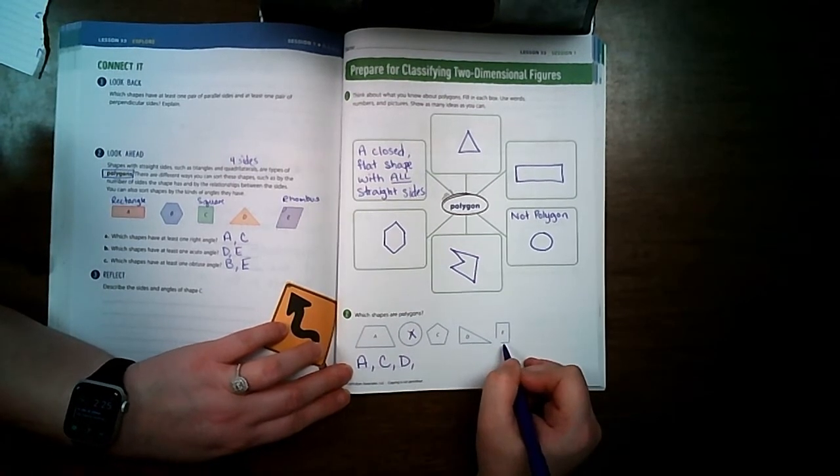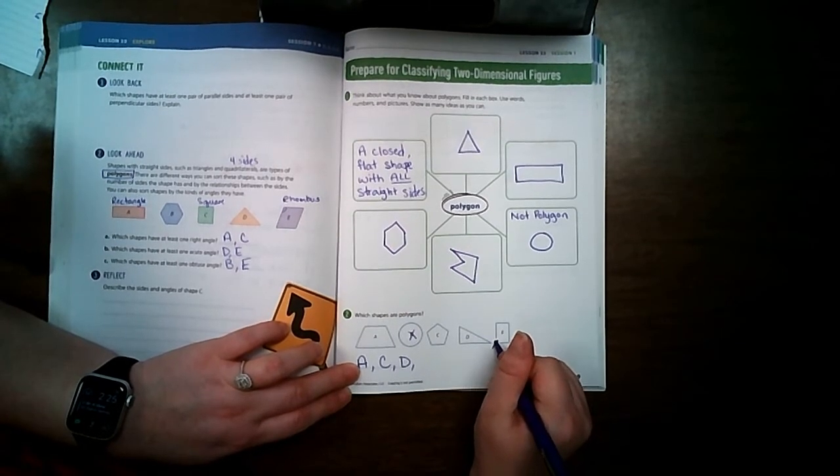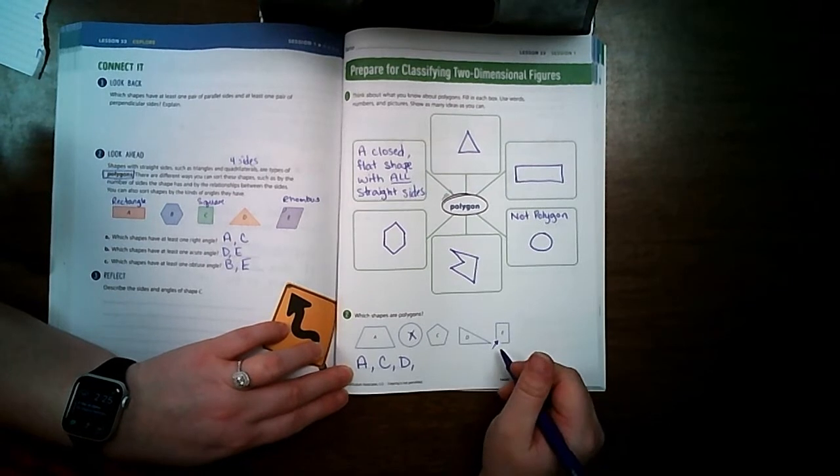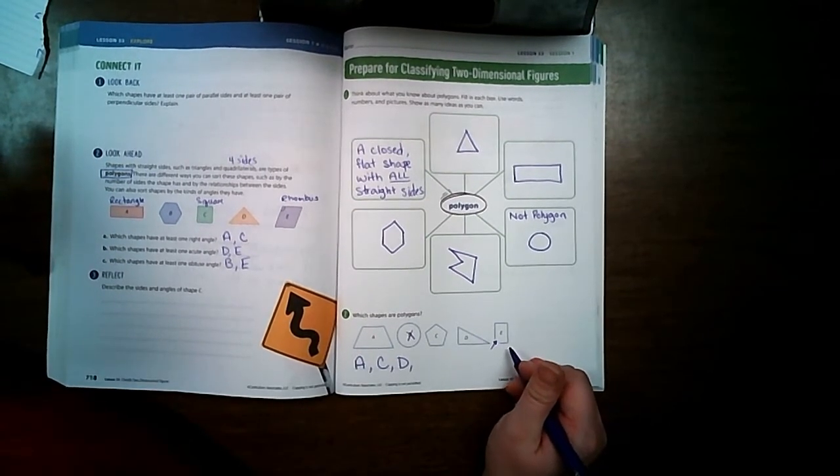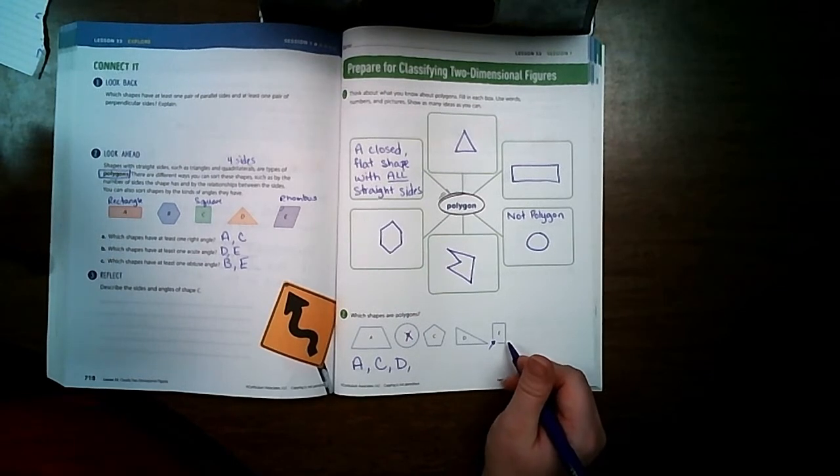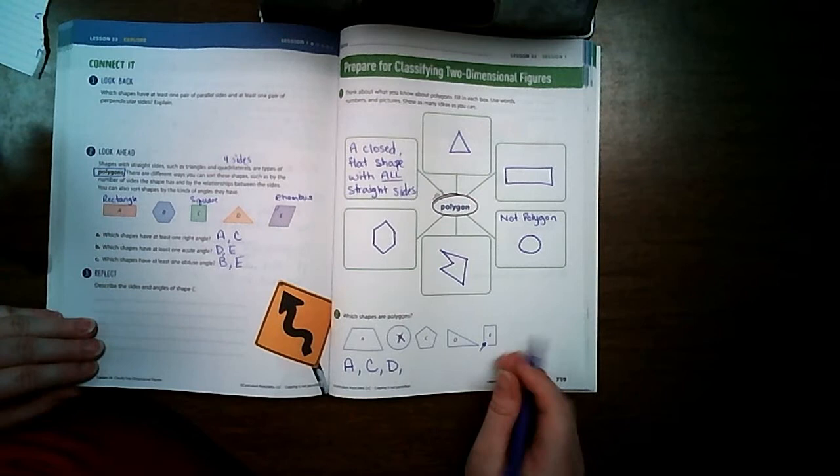Oh, take a look at E here. E is not closed. It's open. See that spot right there? So, because that is open, that means E cannot be a polygon. It has to be closed. Just like it says up here, a closed shape. But this is not closed. It's open.